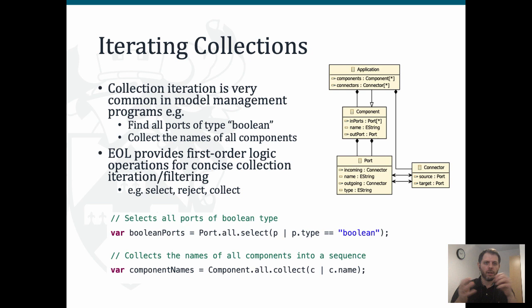EOL supports first-order logic operations by default - filtering operations such as select, or collection operations such as collect. If we wanted to find all ports of Boolean type in our model, we would call Port.all to get all ports, and then the select method to select those ports whose type is Boolean, returning a filtered collection containing only those ports. If we wanted to collect the names of all components into a sequence, Component.all returns all instances of components, and then collect gathers the name of each component, returning a sequence of strings.